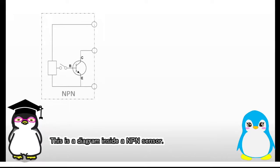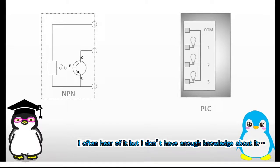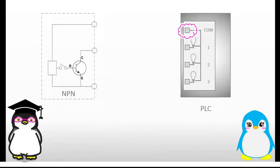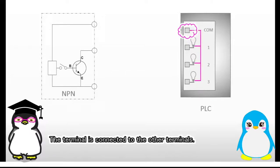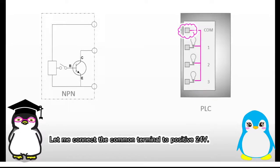This is a diagram inside an NPN sensor. We are going to connect the sensor to a PLC. PLC? I often hear of it, but I don't have enough knowledge about it. That's no problem, the system is very simple. This is a common terminal. The terminal is connected to the other terminals. That's why it is called a common terminal. Let me connect the common terminal to positive 24 volts.